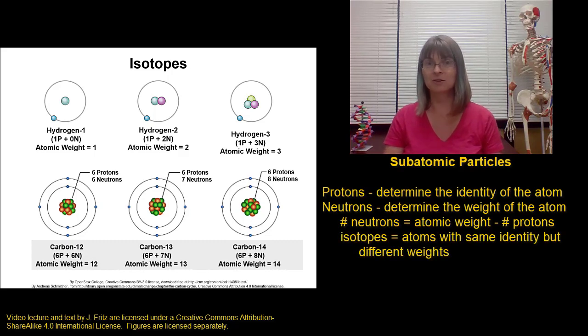When we have two different atoms that have the same number of protons, so it's the same type of atom, but they have different numbers of neutrons, we call those isotopes. So you can have carbon-12, that's carbon that has six protons and six neutrons. Or you could have carbon-13, that's carbon with six protons but seven neutrons. Or you can have carbon-14, which would be carbon with six protons and eight neutrons.